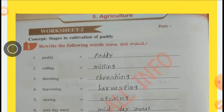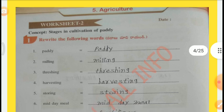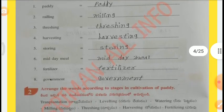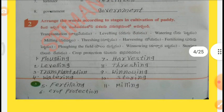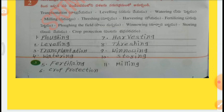Worksheet No. 2 — Concept: Stages in Cultivation of Paddy. Question 1: Rewrite the following words: Paddy, Milling, Threshing, Harvesting, Storing, Midday Meal, Fertilizer, Government. Question 2: Arrange the words according to stages in cultivation of Paddy: 1st Plowing, 2nd Leveling, 3rd Transplantation, 4th Watering, 5th Fertilizing, 6th Crop Protection, 7th Harvesting, 8th Threshing, 9th Winnowing, 10th Storing, 11th Milling.